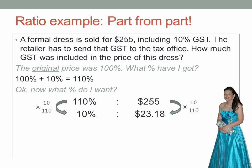And if you get your calculator and do that, the amount you get is $23.18, rounded off to the nearest cent. The GST included in the price of that dress was $23.18.